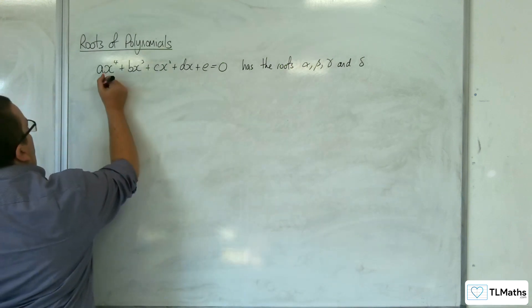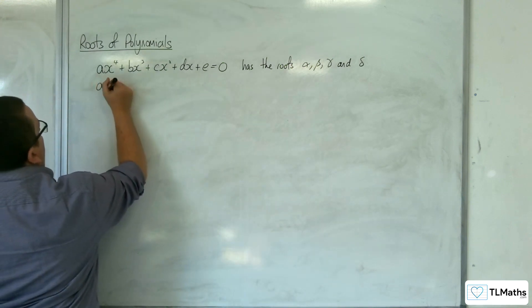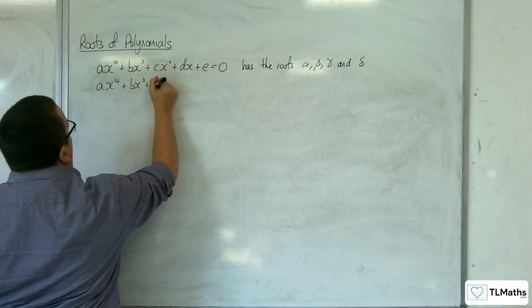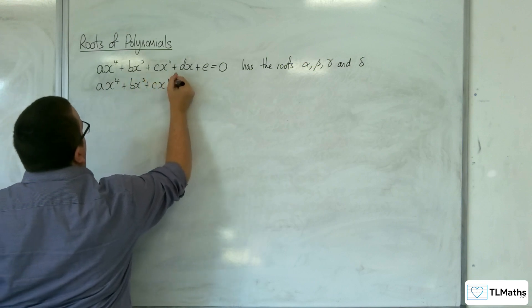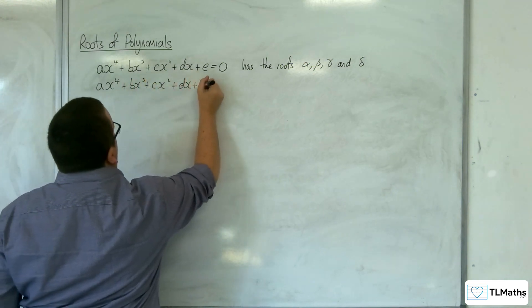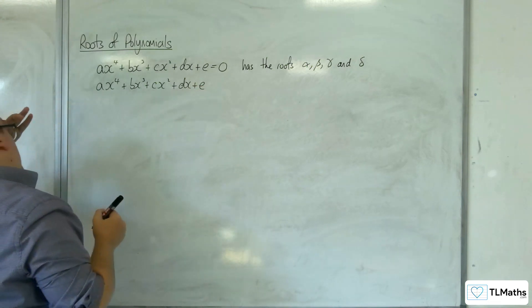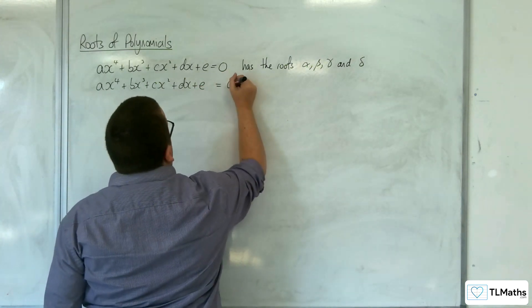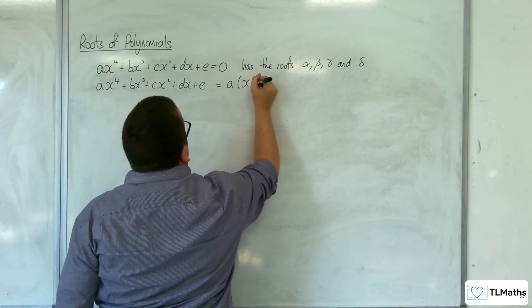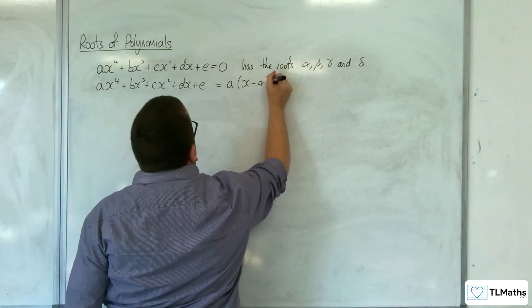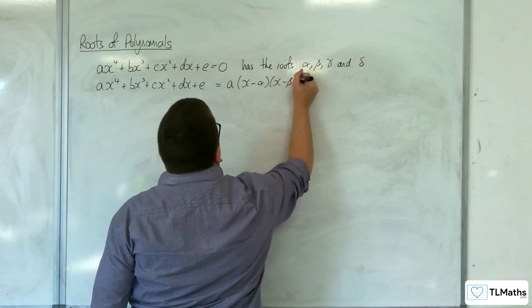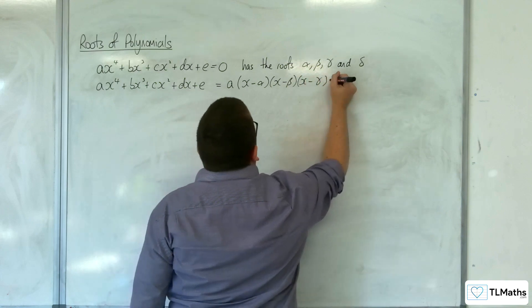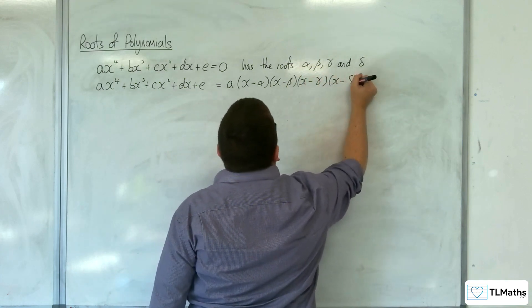So we would be saying that ax⁴ + bx³ + cx² + dx + e can be written in the form a(x − α)(x − β)(x − γ)(x − δ).